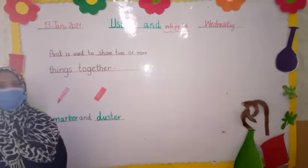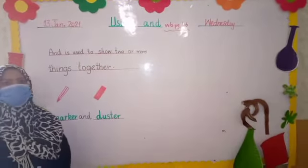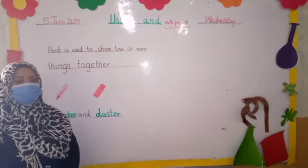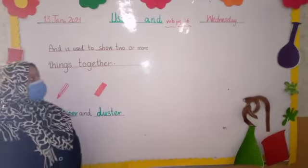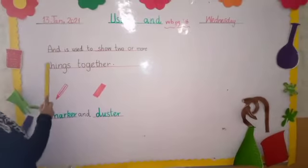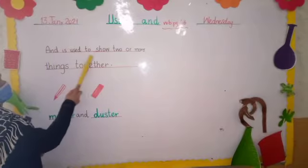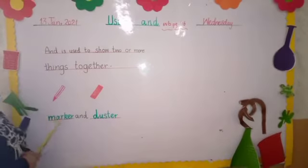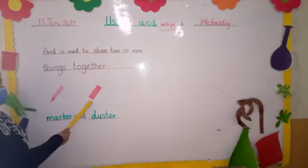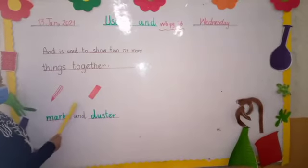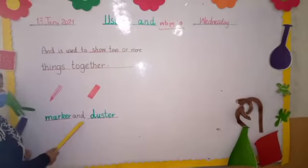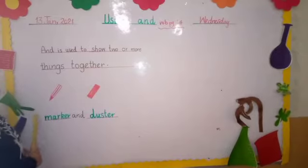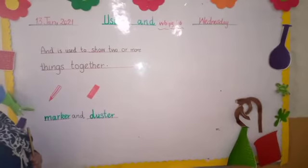Students, here is the concept of 'and'. It is a coordinating conjunction and it is used to join two nouns, two clauses, or more than one sentence together. As you can see, 'and' is used to show two or more things together. For example, here is a marker and a duster — when we join these words we use 'and': marker and duster. These are two nouns.